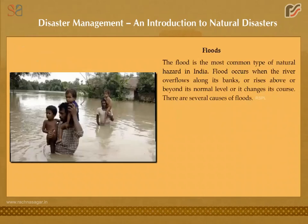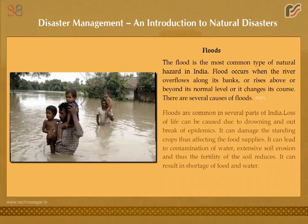Floods are the most common type of natural hazard in India. A flood occurs when a river overflows along its banks, rises above its normal level, or changes its course. There are several causes of floods, and they are common in several parts of India.